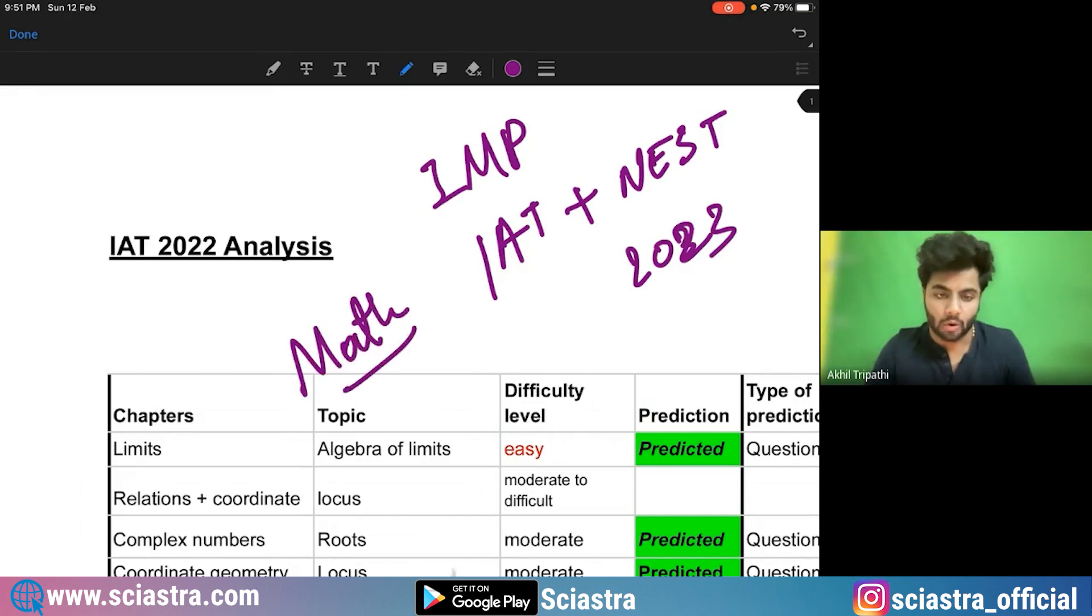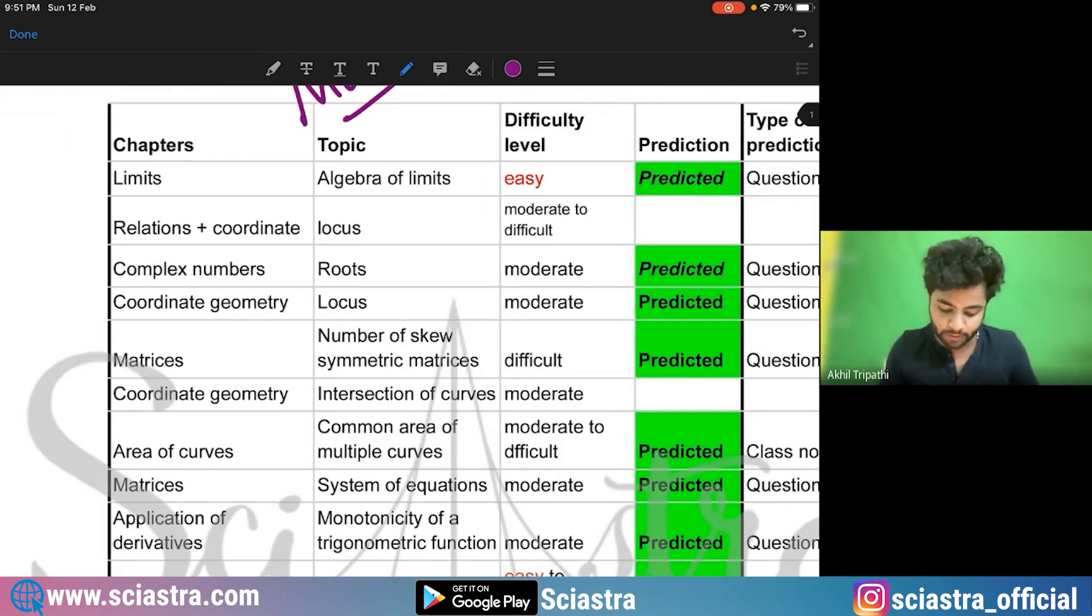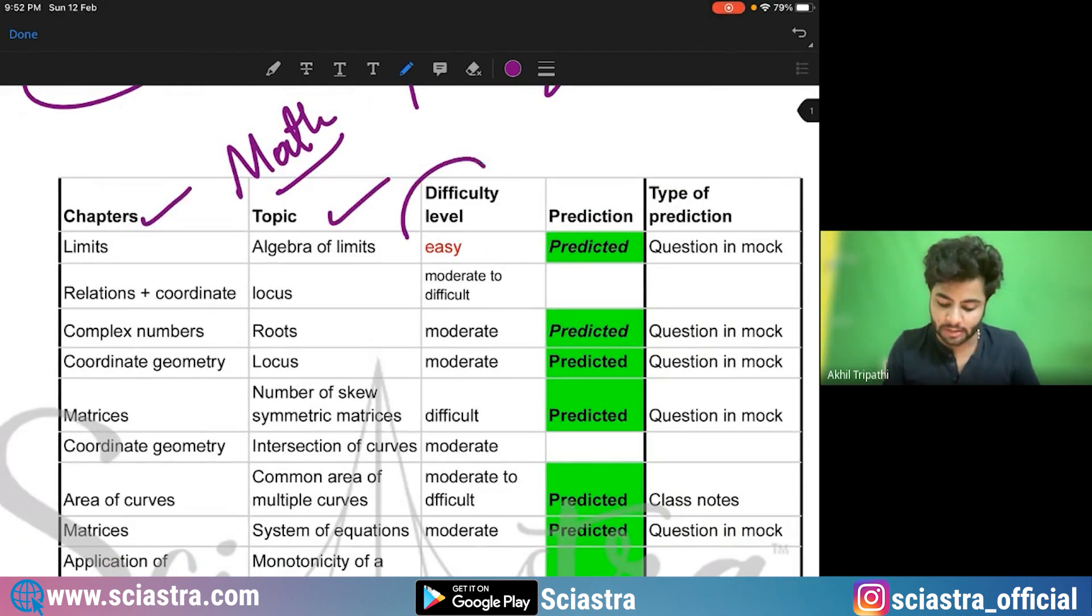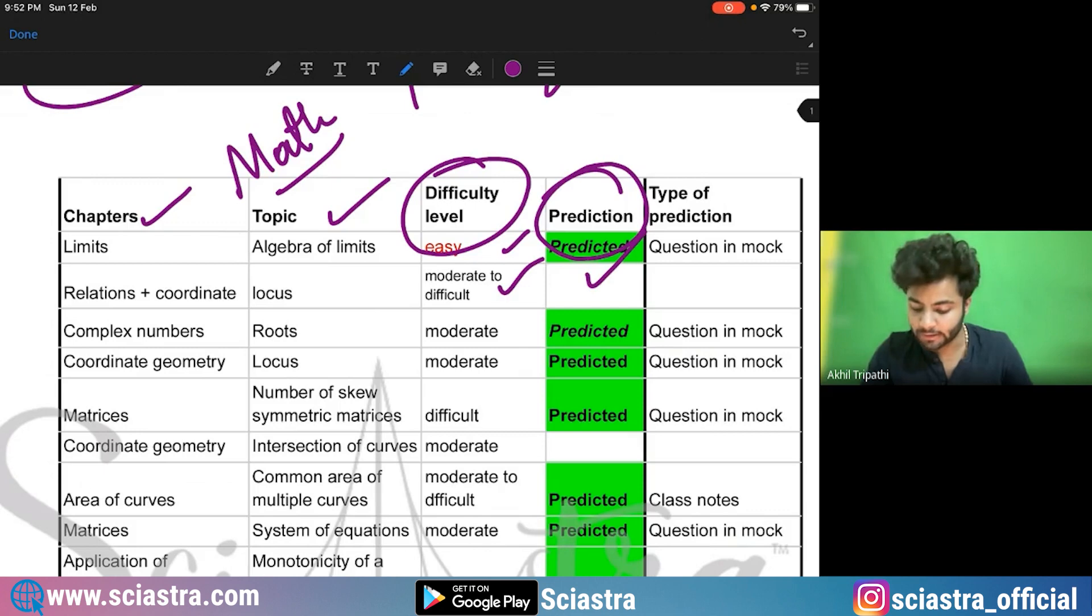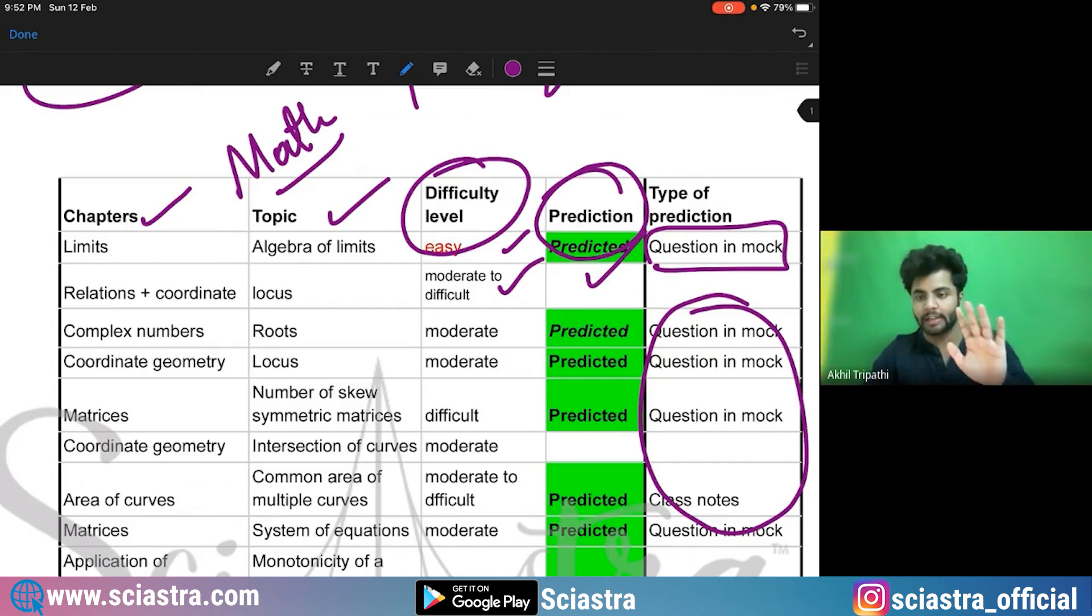Now, this is the analysis of 2022. If you see, we have already told you the important chapters, the topics, difficulty level. For example, is it moderate to difficult? Our prediction that we had already predicted this, we gave this question in the mock test. Similarly, all of these questions we gave in the mock test. I hope you have already seen the analysis video.